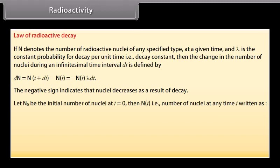Let N not be the initial number of nuclei at T is equal to 0. Then N T, that is number of nuclei at any time T, is written as N T is equal to N not into A raised to the power minus lambda T.